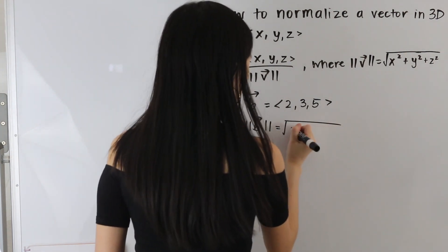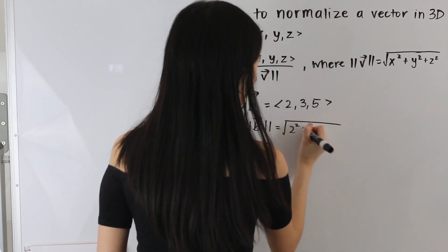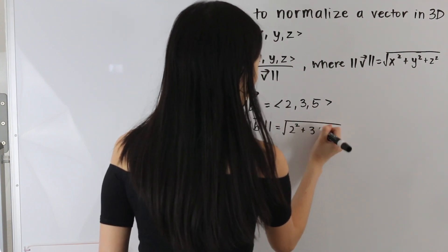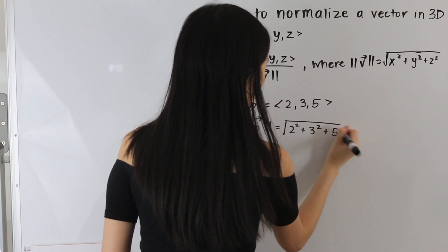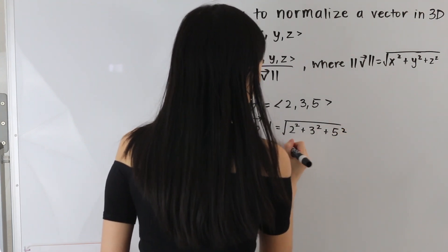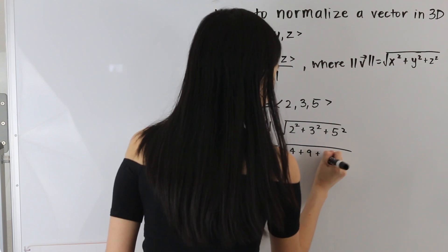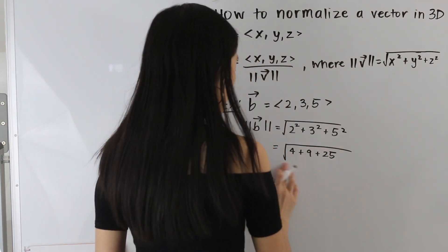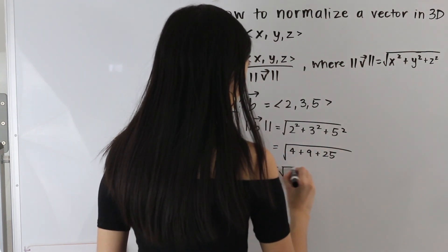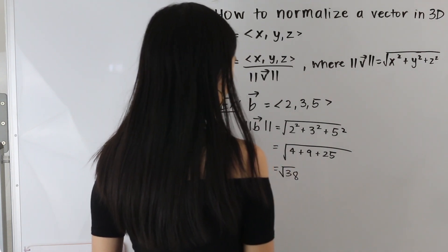So again we're taking the squares of each of the components and adding them up. So we have 2 squared plus 3 squared plus 5 squared. And simplifying this we get 4 plus 9 plus 25. And then simplifying this further we get the square root of 38.